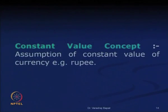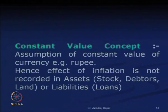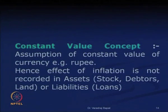The next is the constant value concept. It assumes a constant value of currency — say the rupee in India. The value of currency may change especially because of inflation. So if we are holding some stock, the value may rise due to inflation, but we will not record it. In case of debtors, the amount recoverable remains the same in absolute terms even if its true value has fallen, and we will not record those rises and falls.